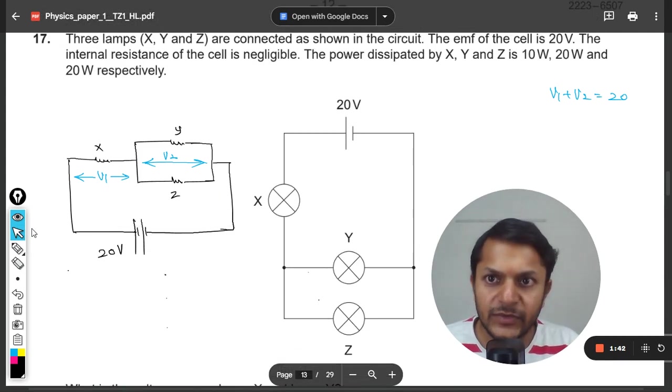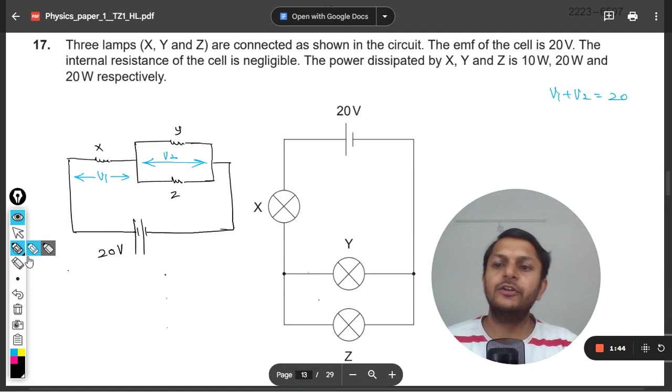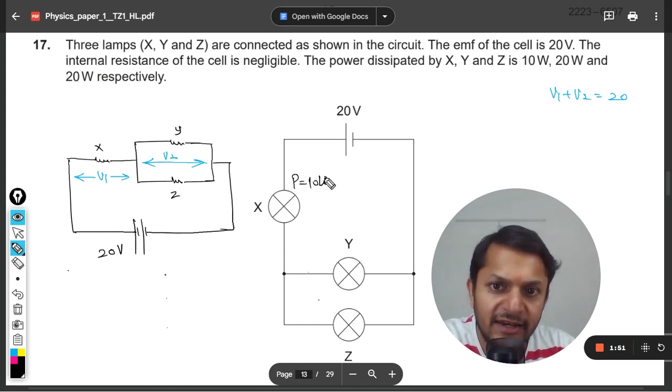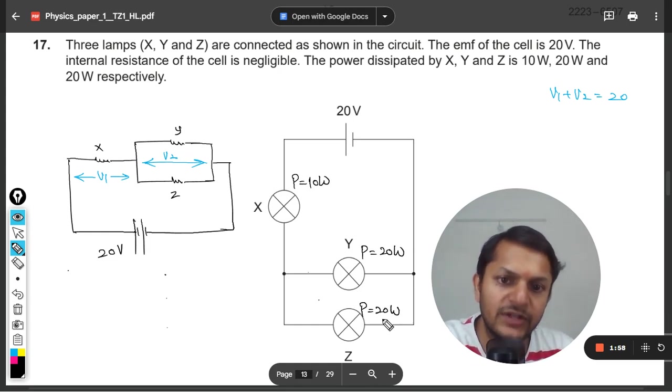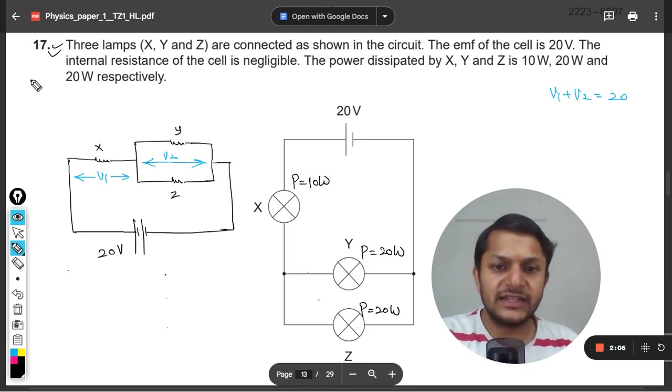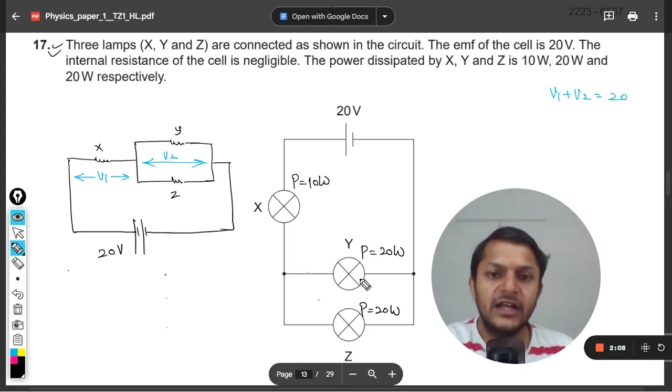Now let us think on this: how to find the value of V₁ and V₂? What is the other piece of information given in the question? The power here is given as 10 watts, power here is given as 20 watts, and power here is given as 20 watts. The lamps are not identical, so all of the resistances will be different.